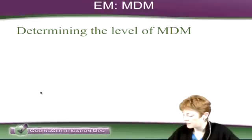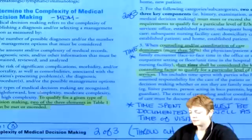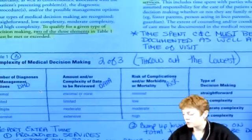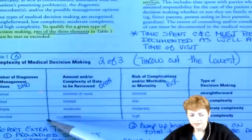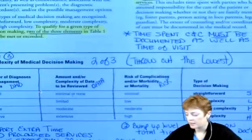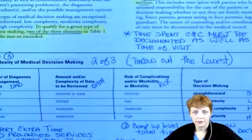In your CPT manuals, there is a medical decision-making table in your E&M guidelines, and it happens to be on page 10. This is just one-third of E&M when you're coding by the history, exam, and medical decision-making. I like to mark things up and make it more visual — I actually drew a line and made them look like columns, because that's what they are. To the far right is the score, or the level of medical decision-making.